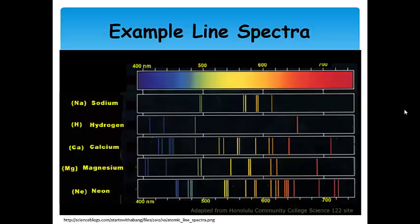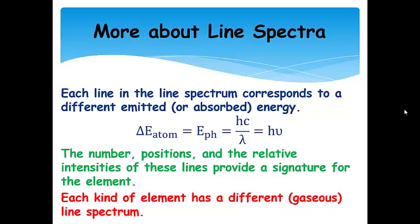Here are a few more line spectra as examples: sodium, hydrogen, calcium, magnesium, and neon. Every element has a line spectrum, and they're all different. The wavelengths of the lines, the intensities, the numbers of lines—those are all different, and those are a signature for each individual element.